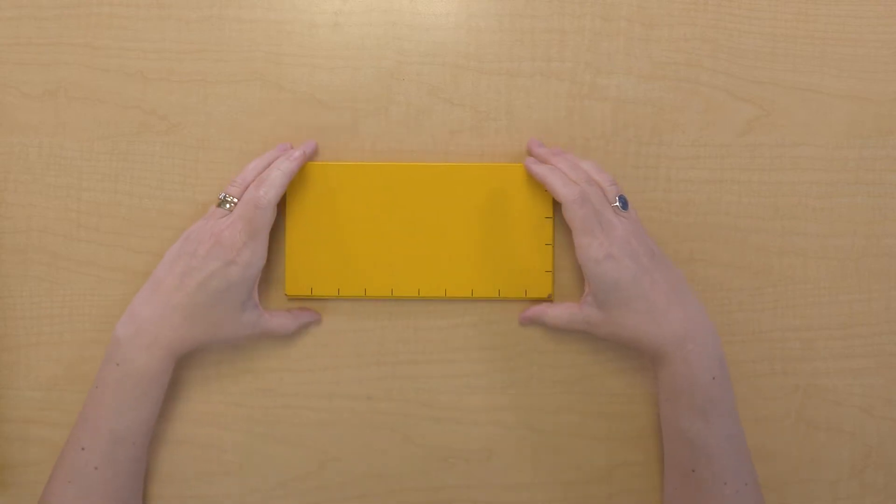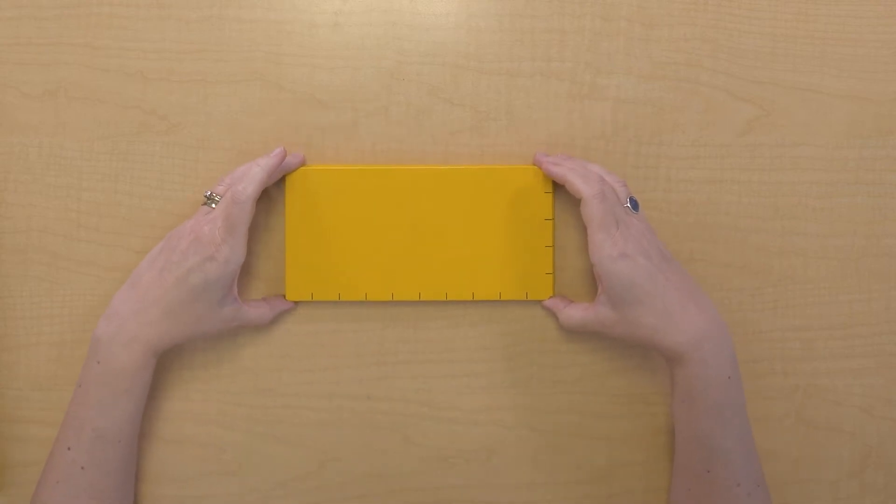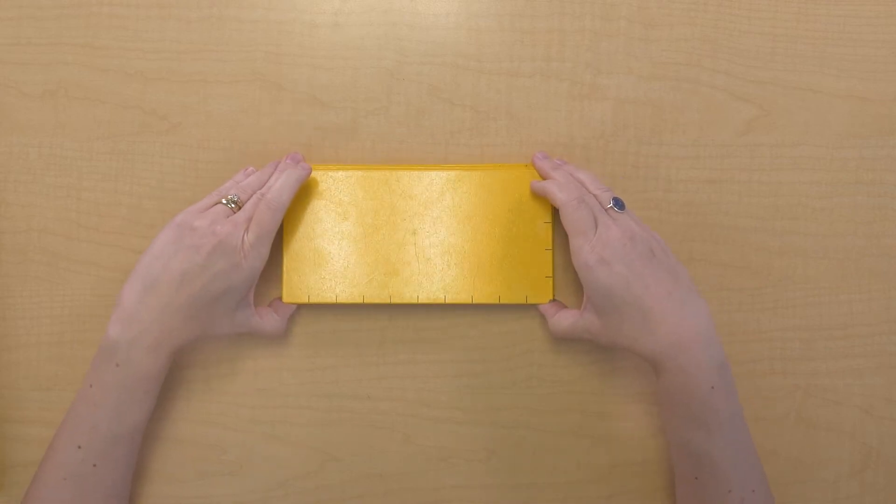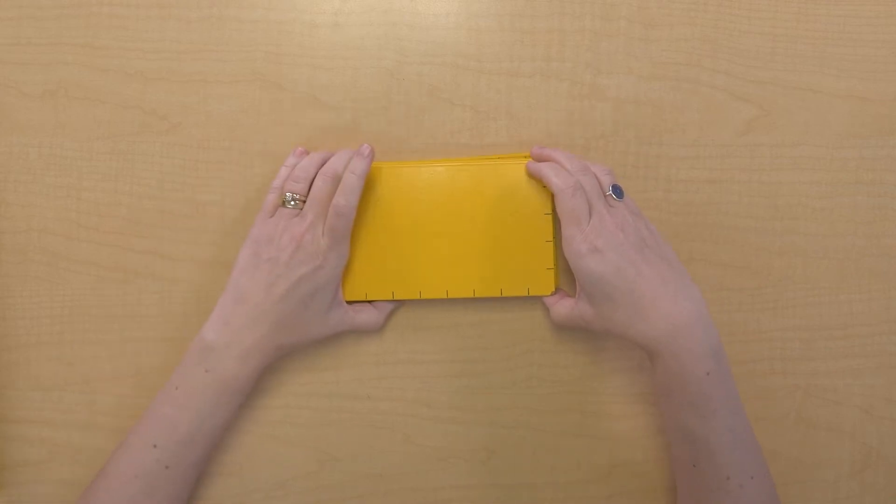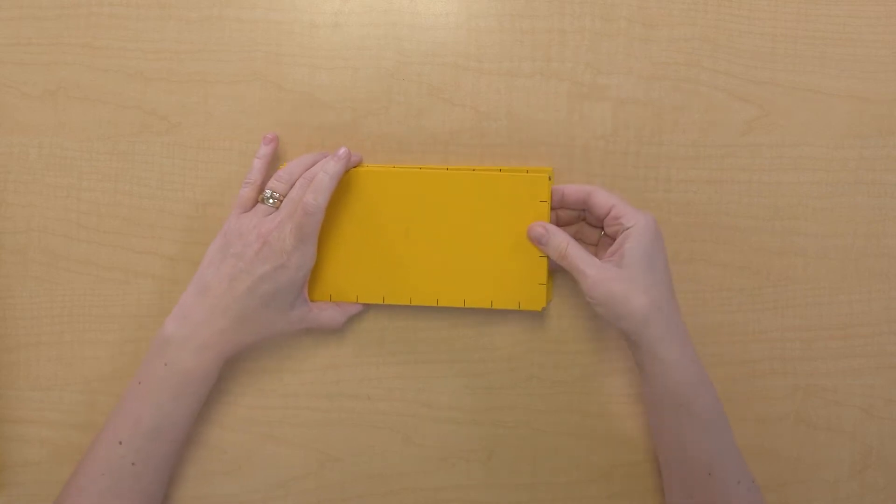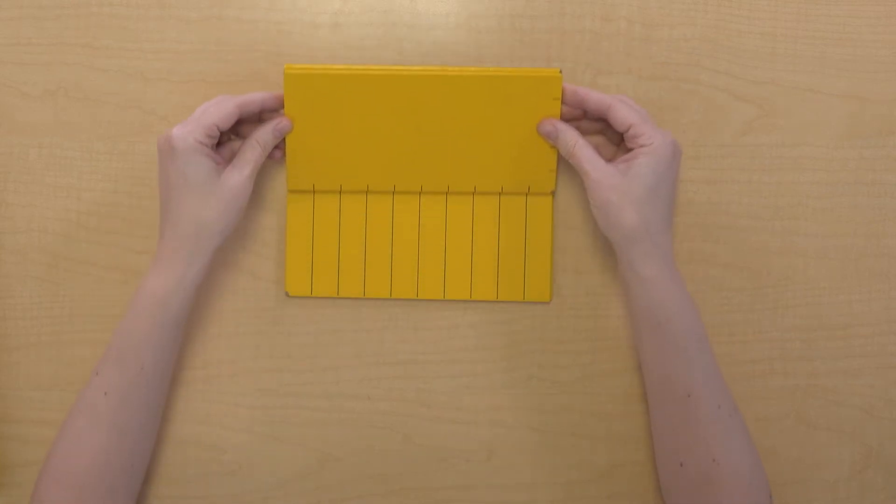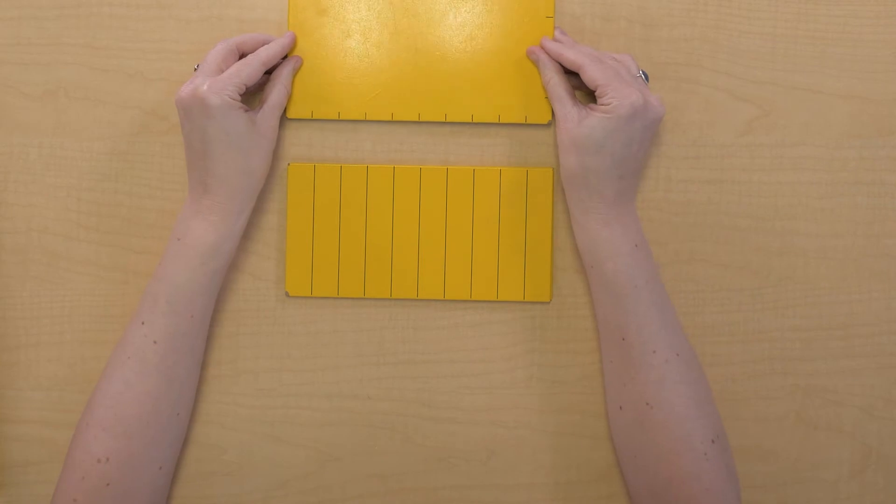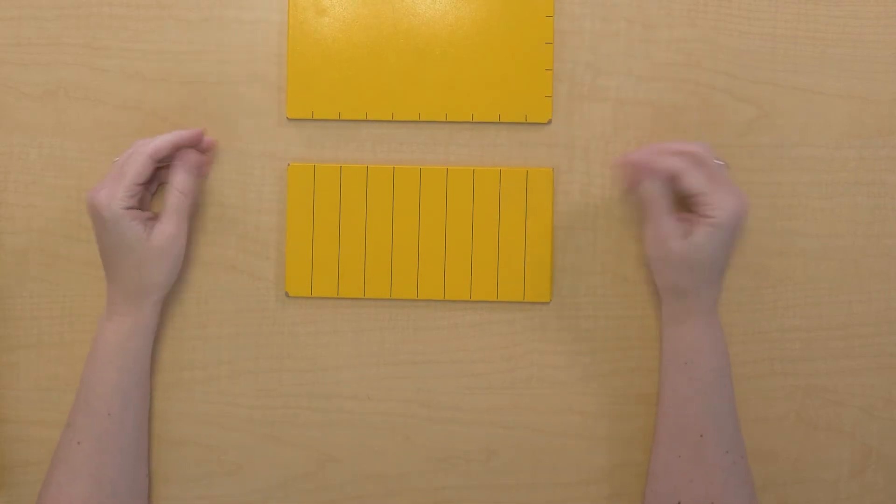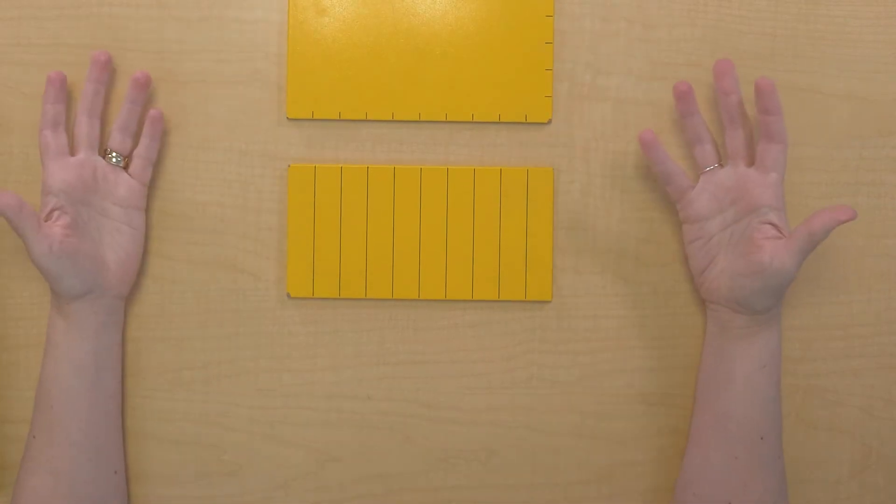Well, maybe if we draw out our marks from the base, that'll help us and give us something to count to be able to measure. Let's see. Does that help us at all? No, we still have more rectangles to count.